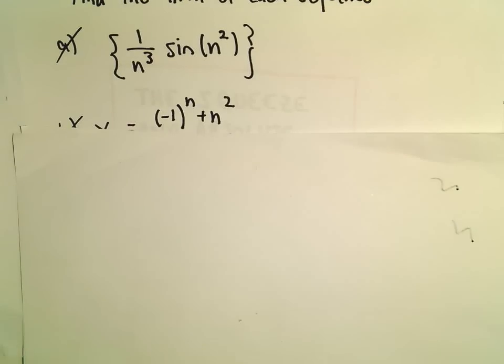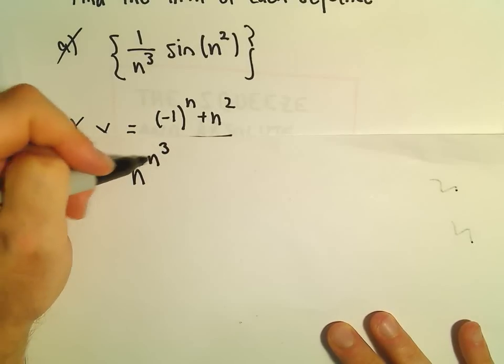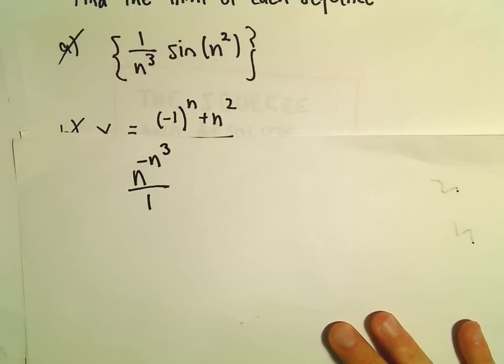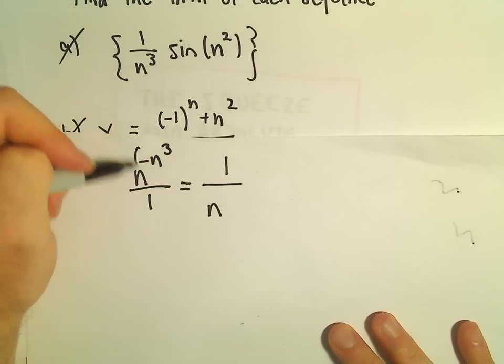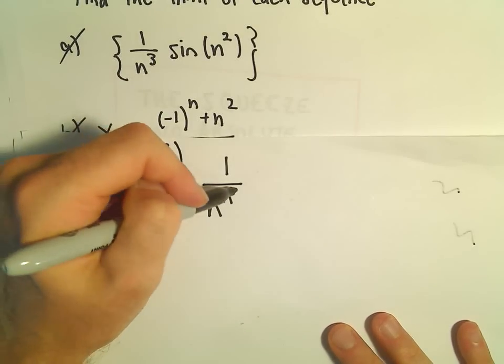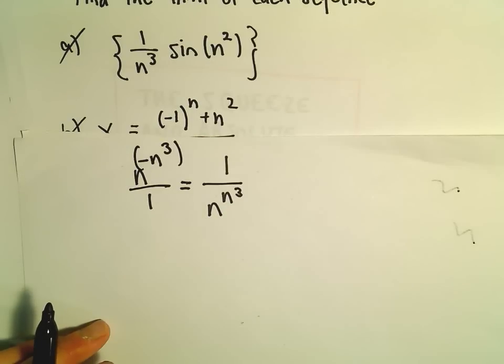The first thing I'm going to do is rewrite this. So n raised to negative n to the third, we can always put that over 1. We can make negative exponents positive by sticking that exponent in the denominator, so now we have 1 over n raised to positive n to the third.